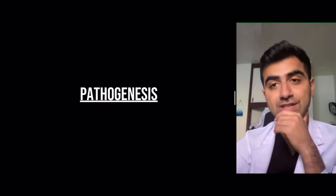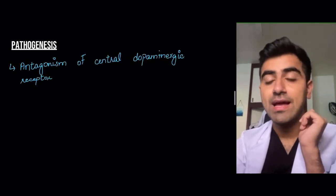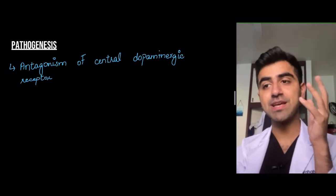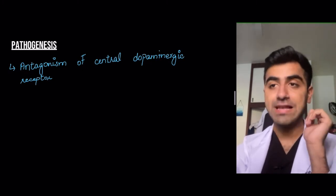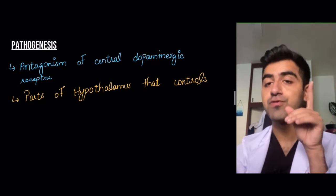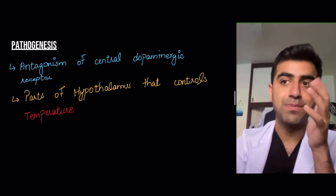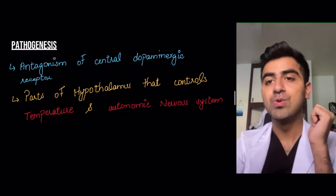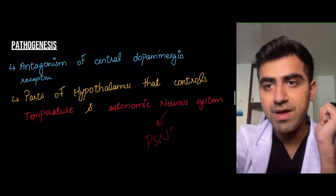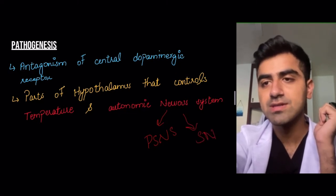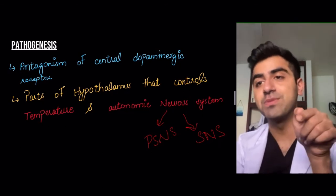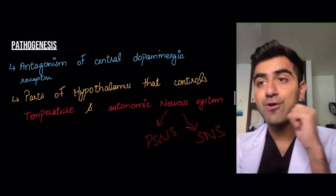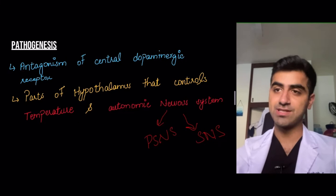What's the pathogenesis of neuroleptic malignant syndrome? Due to the antagonism of central dopaminergic receptors — by central we mean the brain — dopaminergic receptors in the brain become antagonized. This is linked to the formation of NMS, especially in the parts of the hypothalamus that control temperature, which explains the hyperthermia, and also the autonomic nervous system. There are two parts to the autonomic nervous system: the parasympathetic nervous system (PSNS) and the sympathetic nervous system.